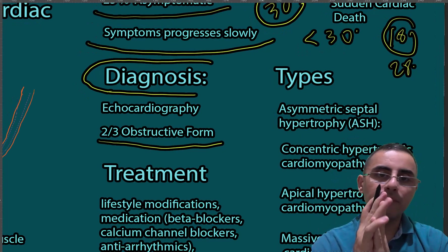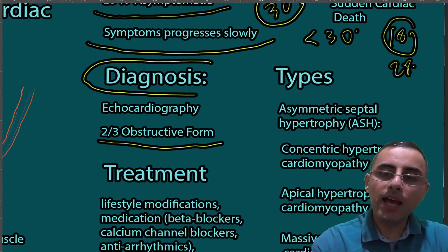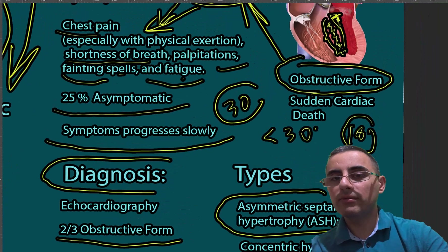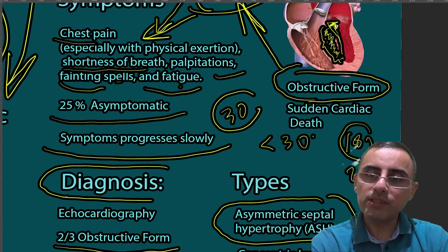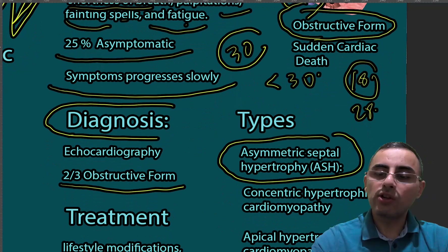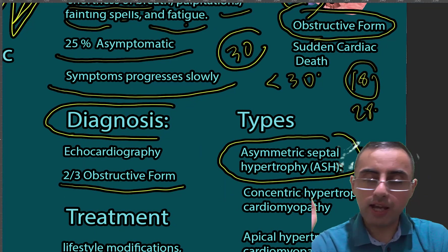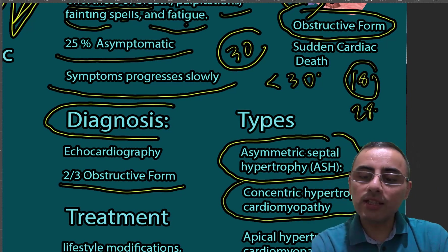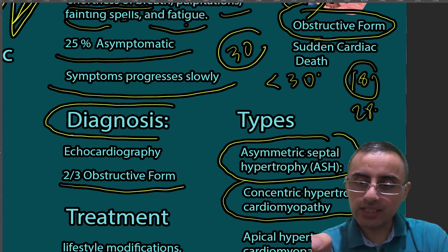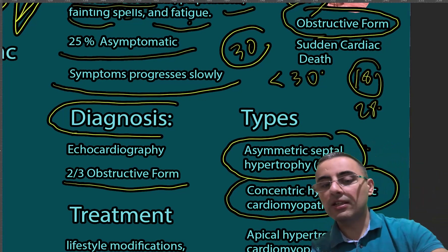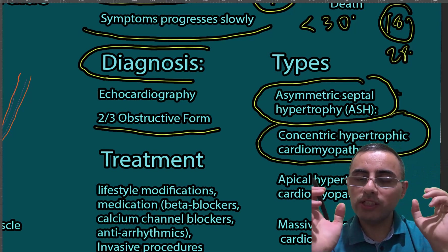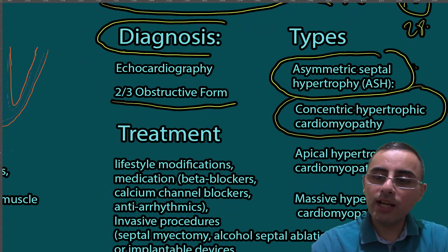There are different types of hypertrophic cardiomyopathy. The first is asymmetric septal hypertrophy, where thickening is concentrated in the septum asymmetrically — this is the most common form. We also have concentric hypertrophic cardiomyopathy, which is more generalized, affecting not only the septum but other parts of the heart as well.